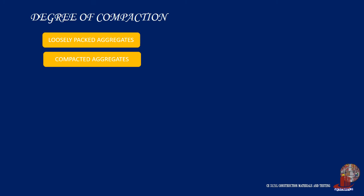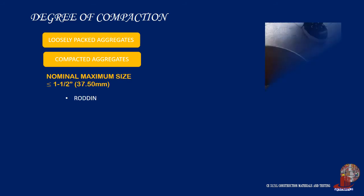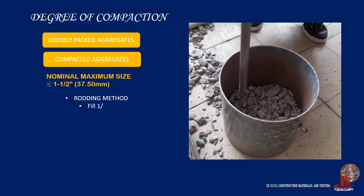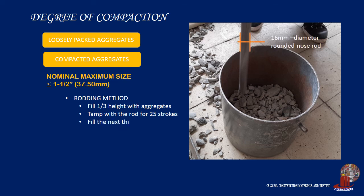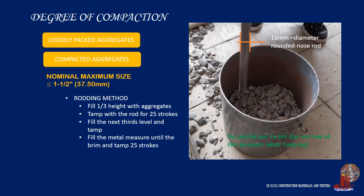For compacted aggregates, the test for bulk density is to be determined depending on the maximum size of aggregates and the degree of compaction. If the nominal maximum size of aggregates is not greater than 1.5 inches or 37.5 mm, the rodding method is used, whereby bulk density can be determined by filling the container in three layers and tamping each layer with a 16 mm diameter rounded nose rod. After filling in three layers, level the top surface and evaluate compacted bulk density by using the same expression as for loose bulk density.